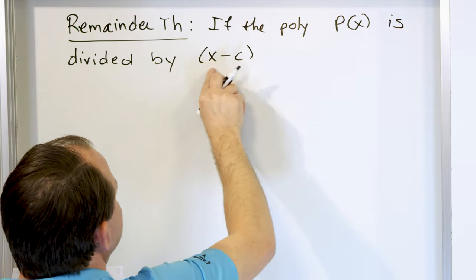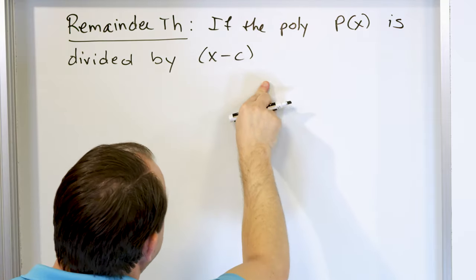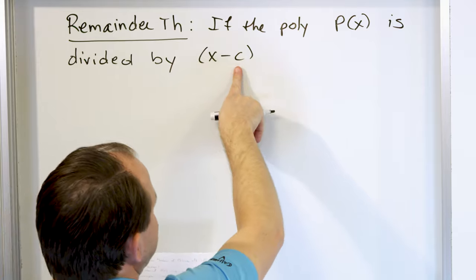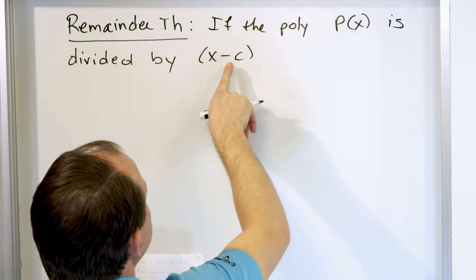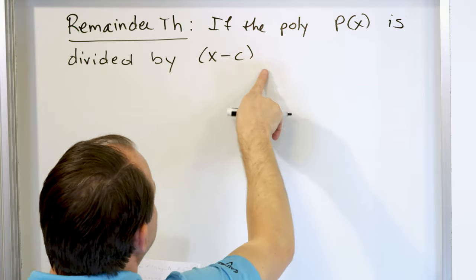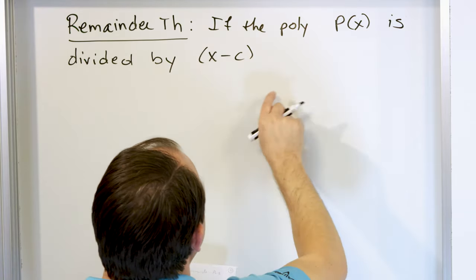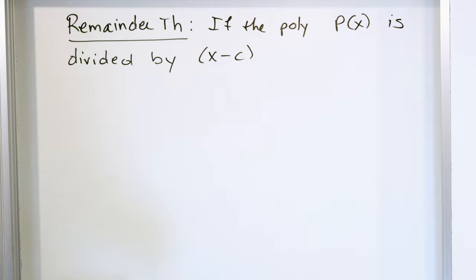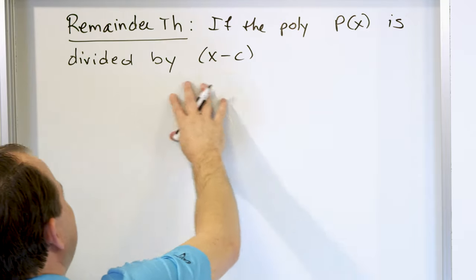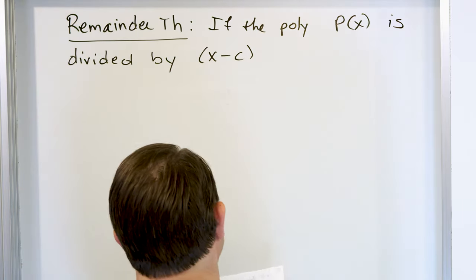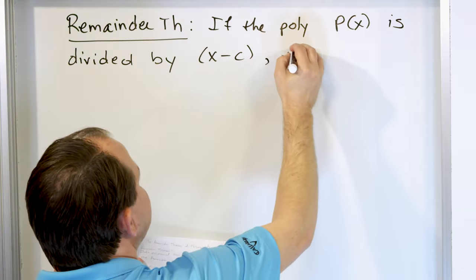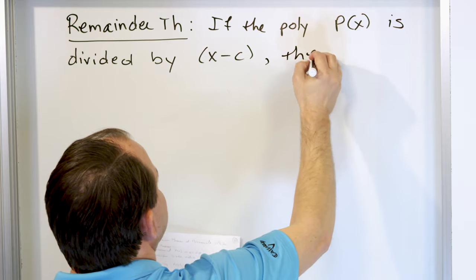This could be x minus 1, x minus 3, x minus 4. Also, because c could be positive or negative, it could be x plus 5, x plus 10 — just like what we're doing for synthetic division. If it's divided by anything like this, then the following thing is true.